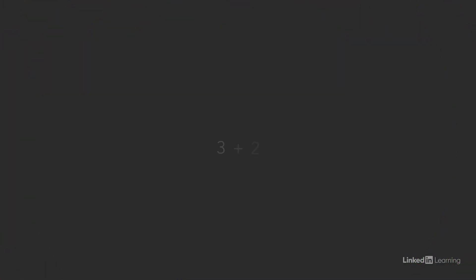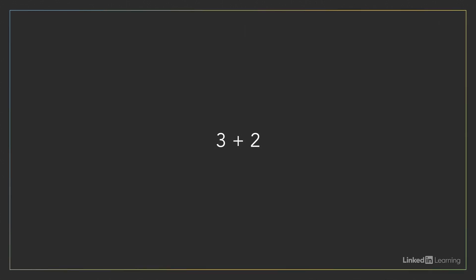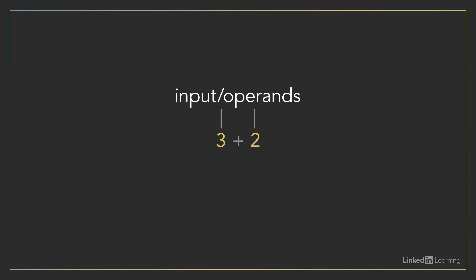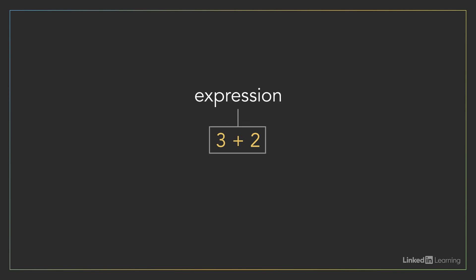Flashback to primary school. When we have three plus two, the plus sign is the operator and three and two are the inputs, also known as operands. In programming, the combination of operators and operands that break down to a single value are called expressions.